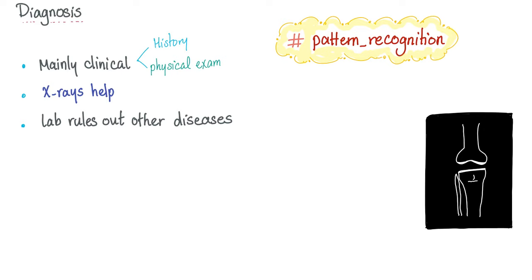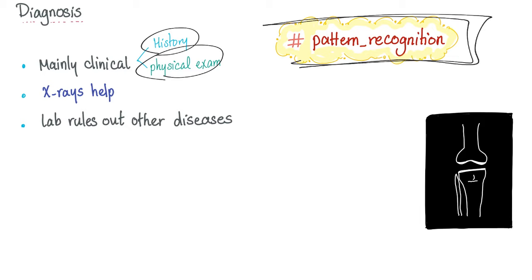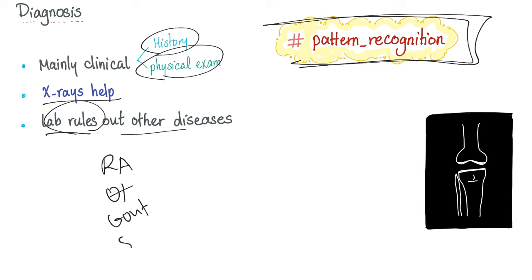Now let's diagnose this disease. Diagnosis is mainly clinical — you need history and physical exam. Remember, rheumatology is all about pattern recognition: if it quacks like a duck and walks like a duck, it's probably a duck. X-ray helps, of course. Lab results are used to rule out other diseases such as rheumatoid arthritis, gout, Sjögren's, lupus, etc. When taking history, try to recognize whether it is primary or secondary osteoarthritis.